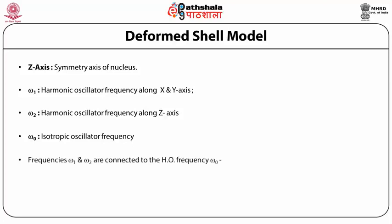The frequencies ω₁ and ω₂ are connected to the isotropic harmonic oscillator frequency ω₀ by: ω₁² = ω₀²(1 + δ/3). This makes a connection between the harmonic oscillator frequencies of the deformed nucleus and the spherical nucleus.